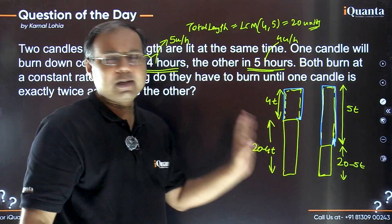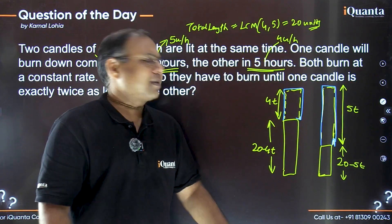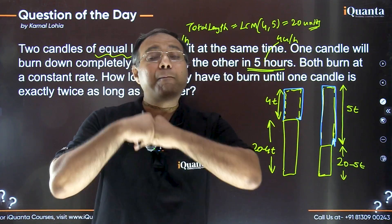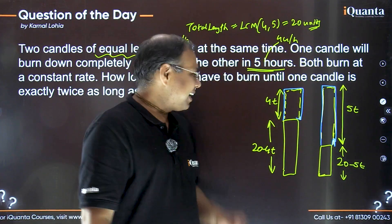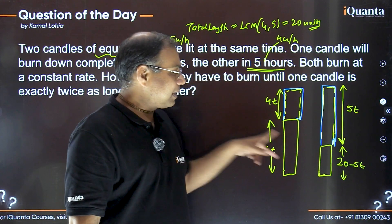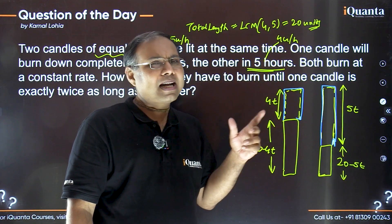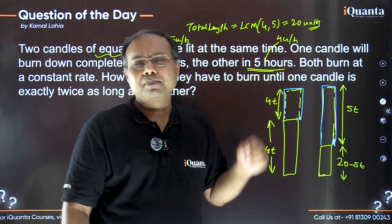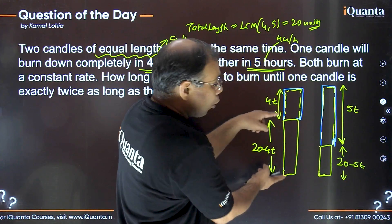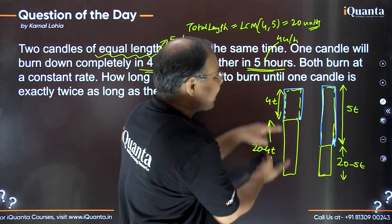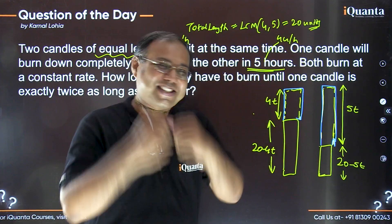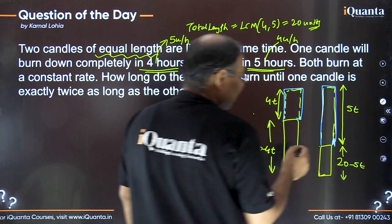Now, what is the next step? Most of you would say: set up a simple equation that this length is two times the other. That is perfectly fine. But let's make it simpler. If the longer candle is twice the length of the shorter one, that means the shorter candle fits twice inside the longer one — so whatever their gap is, that gap must be equal to the shorter length.